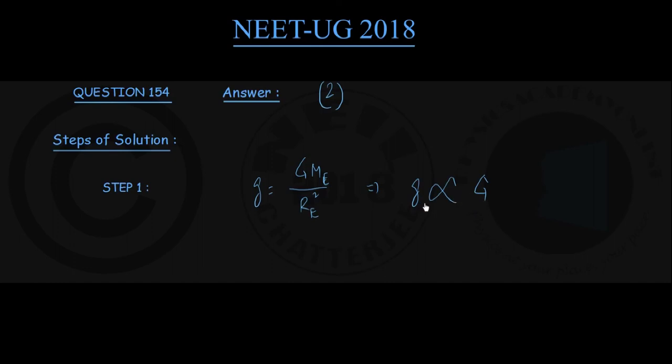This really contradicts the option number 2 statement that g on the earth will not change. So that is the incorrect statement, and for us option number 2 is the correct option.